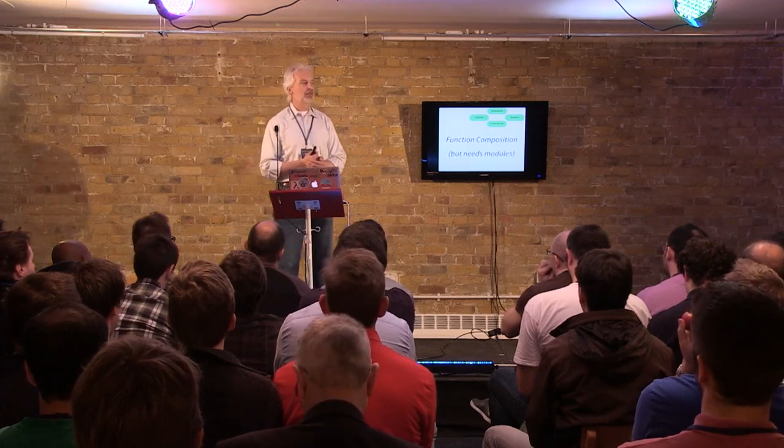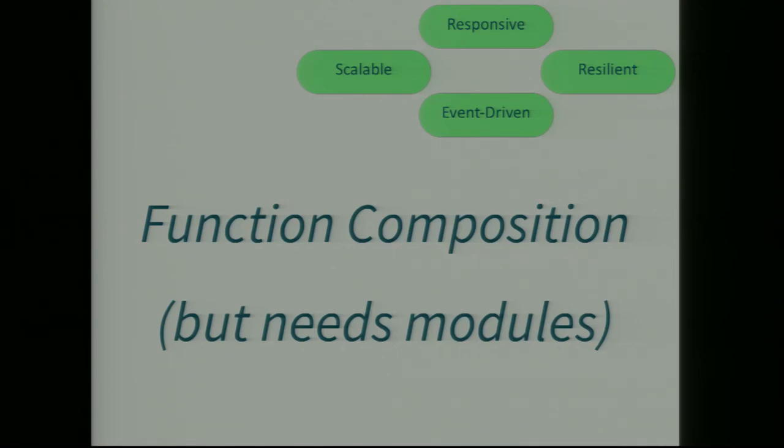One piece that's missing in most functional languages is good modularity constructs. Erlang has a nice one — a simple statement at the beginning of your module saying what functions you're exposing. OCaml has a good module system. Scala uses objects as its modularity system — technically traits. This is something you have to fill in if the core language doesn't provide it.